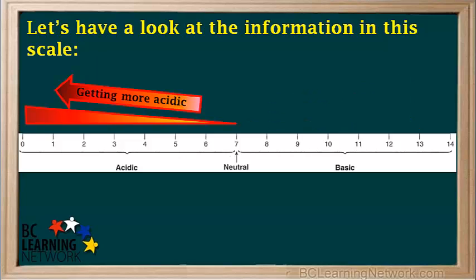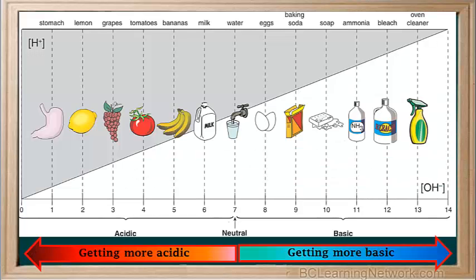Similarly, the lower the pH is below 7, the more acidic a solution is. For example, pH 6 is slightly acidic, while pH 0 is very acidic. The pH scale in the Science 10 data booklet gives the approximate pH of some common substances. When you're asked questions about the pH of a specific substance, don't forget to consult this table. You should also be able to give a rough estimate of the pH of these and similar common substances from memory.